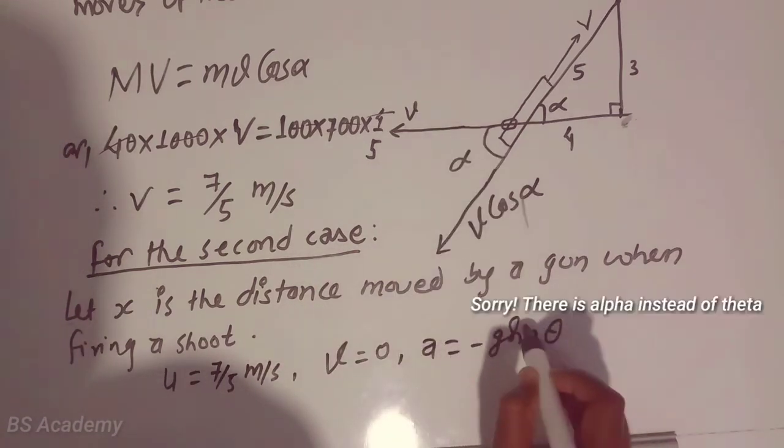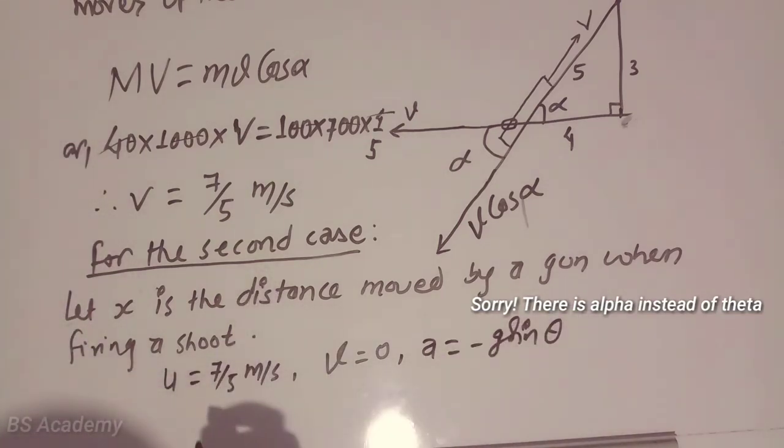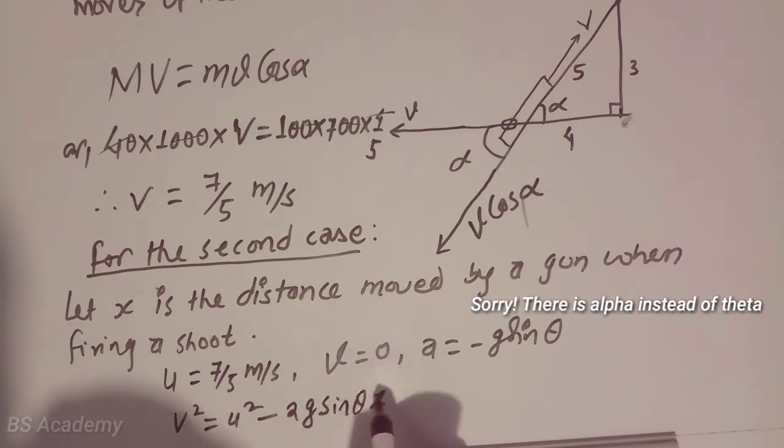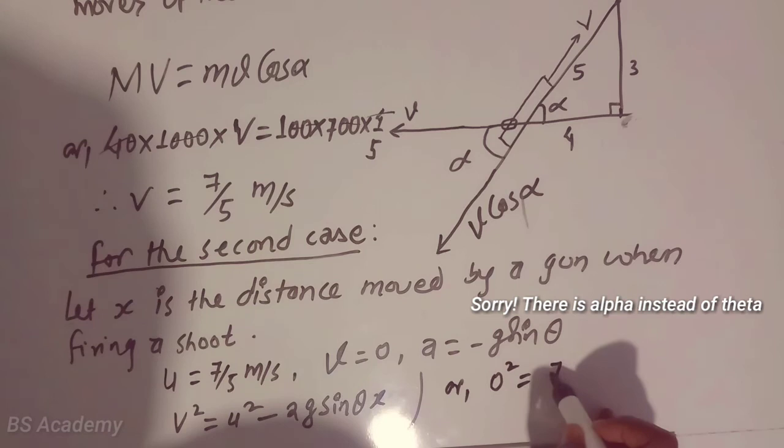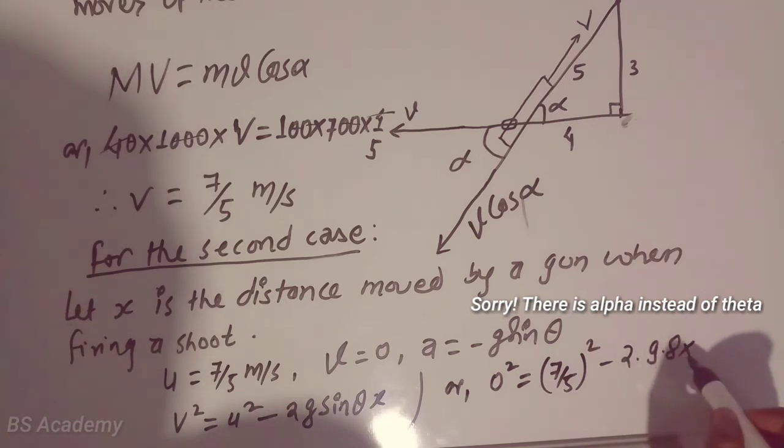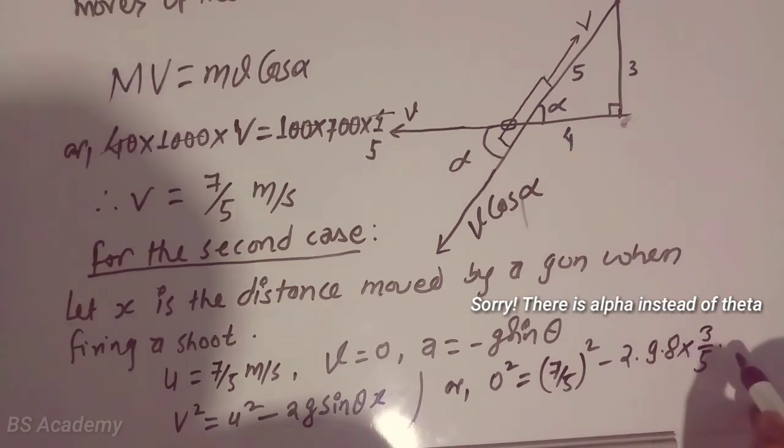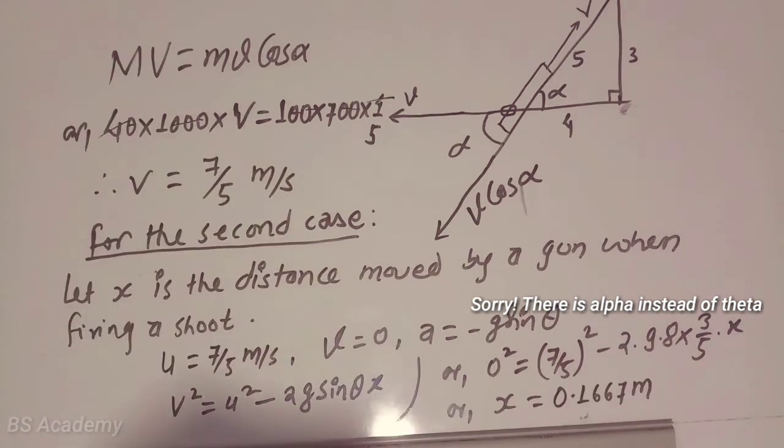Final velocity will be 0, and acceleration along the inclined plane is minus g sin theta. From the equation of motion, we can write V² = U² - 2g sin theta x. X is the distance moved by the gun when firing a shot. Now plug in the values: 0² = (7/5)² - 2(9.8) sin theta, which is 3/5, times x. This is the distance moved by the gun on the inclined plane.